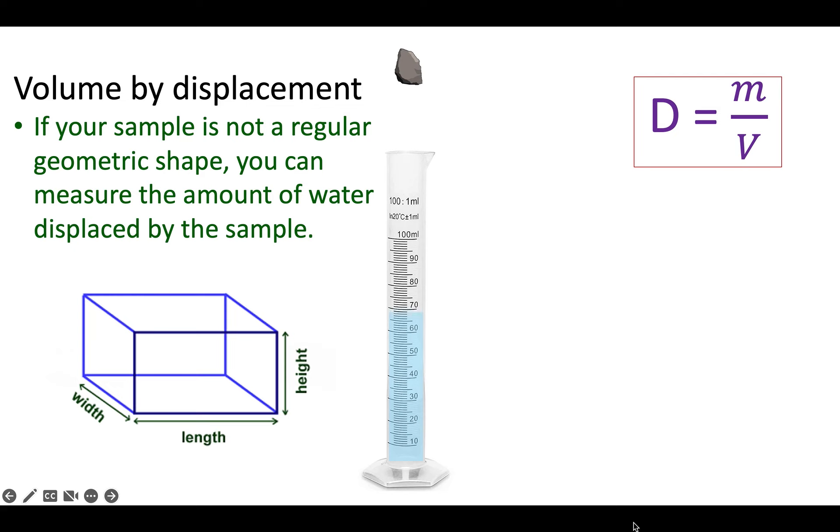We can measure the mass by just putting the object on a balance or a scale, and it'll give us the reading. But for volume, what we've been doing is we've always, to this point, dealt with regular geometric solids, cubes, rectangular prisms, anything like that where we can just get out a ruler and measure the length, the width, and the height, multiply and get the volume.